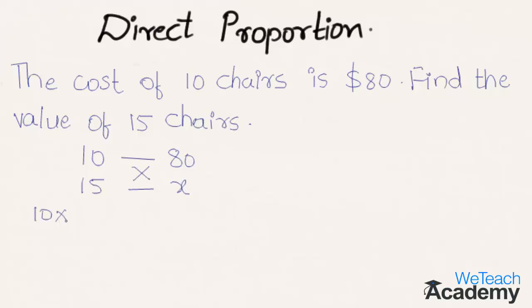We get 10 into x on the left hand side which is equal to 15 into 80 on the right hand side. That implies we get 10x which is equal to 1200.